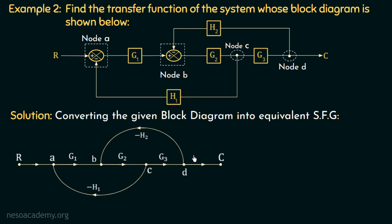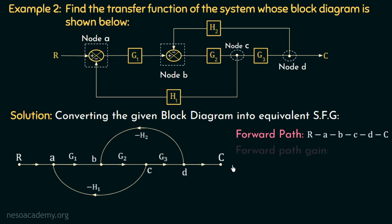Now we have to apply Mason's gain rule to find the overall transfer function. The first step is to check the forward path. If we observe this signal flow graph, there is only one forward path: R, A, B, C, D, C. Now we will calculate the forward path gain, which is the product of branch gains encountered in traversing the forward path. In this case, the forward path gain will be 1 × G1 × G2 × G3 × 1, so the forward path gain is G1·G2·G3.